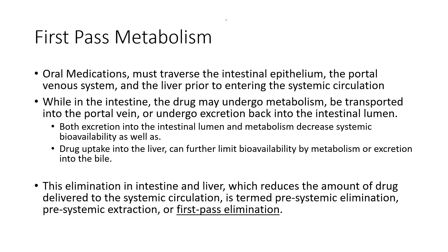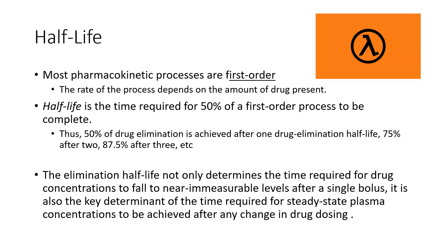We call this first-pass metabolism — where we eliminate some of the drug before it gets into systemic circulation. This is relevant for oral medications because they have to go through the GI system. If we want to bypass that, we might use IV medication or a sublingual approach. With oral medications, concentrations aren't as exact because everyone's metabolism and liver function is a little different. If we ever want something to quickly get into the bloodstream and act on tissue, we'll often use IV because it avoids first-pass metabolism.